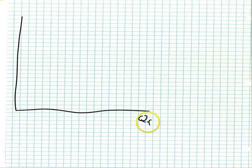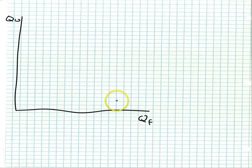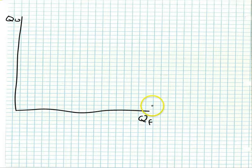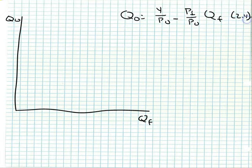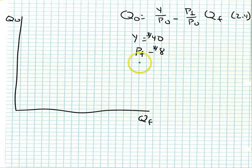Let's go back to a graph and see what happens when the price of one of the goods changes. We have two goods, so the price of food could change or the price of other goods could change. In our class, we always put the own good on the horizontal axis. So again, Q_o equals Y over P_o minus P_f over P_o times Q_f — equation 2.4 — where Y equals $40, P_f equals $8, and P_o equals $4.